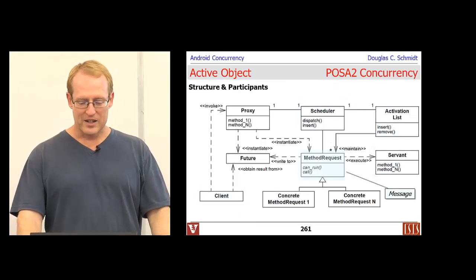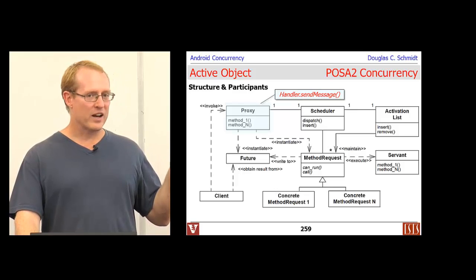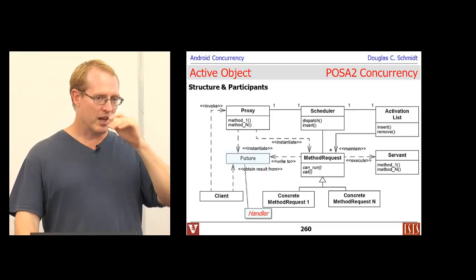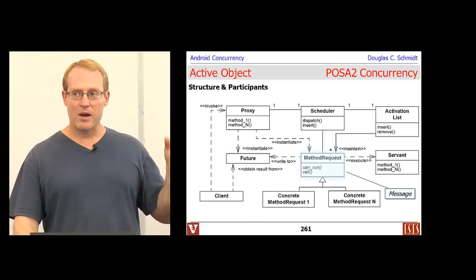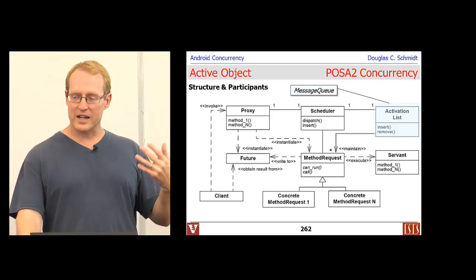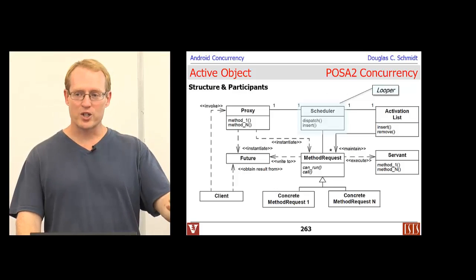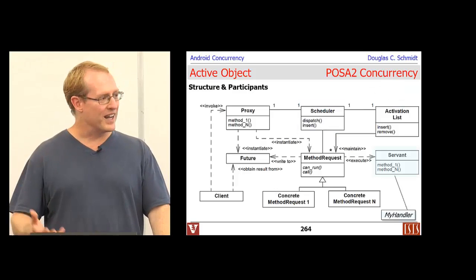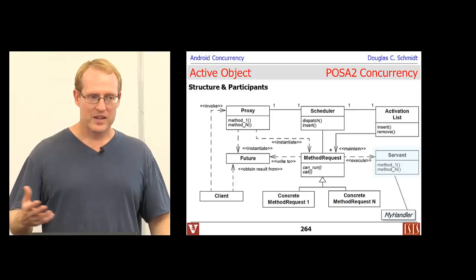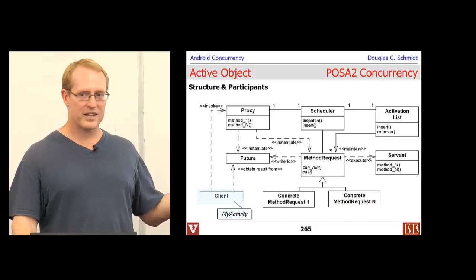The mapping onto Android is as follows: you invoke an operation on a handler, which is a proxy-like thing, and there's another way to use a handler as a future. The method request in Android out of the box is essentially a message. That gets stuck into a message queue, which is the activation list. There's the looper, which plays the role of the scheduler in conjunction with the message queue. Whatever handler you define that subclasses from the default handler class and fills in handleMessage — that's the servant.